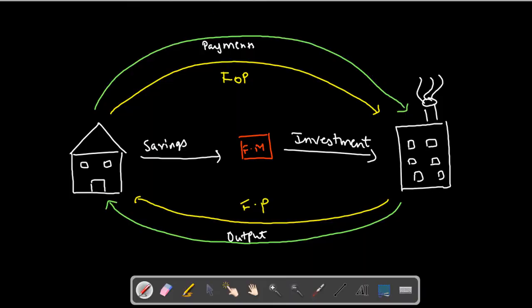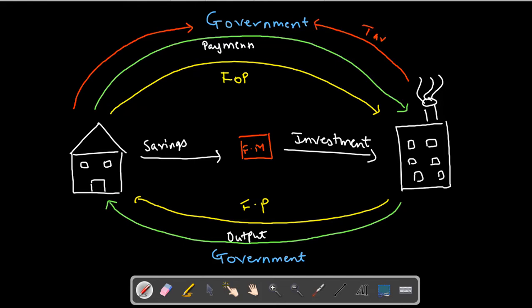When we introduce the government in the circular flow of income, the government actually has two jobs. One is to collect taxes; the other is to do government expenditure in the form of subsidies and transfer payments. The government taxes both the households as well as the firms. The government pays subsidies to the firms and pays transfer payments to the households.